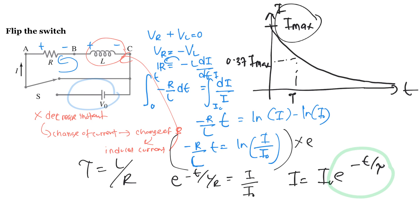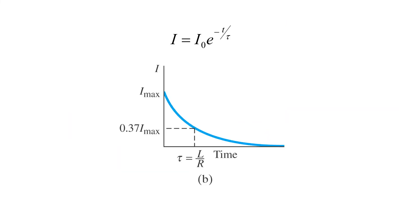Note that I_max = V/R, because at maximum (saturated) current the inductor acts as a useless coil and all voltage drop is across the resistor. Be careful which formula to use depending on whether the circuit is connected to the potential difference or disconnected. The questions may ask for derivation or just application of the formula.